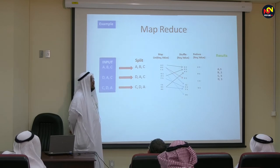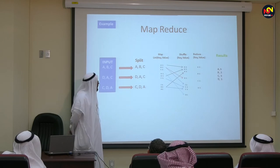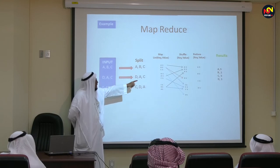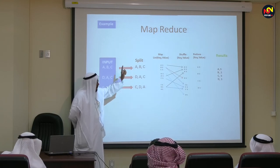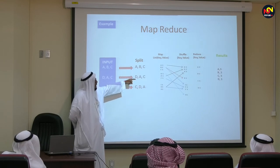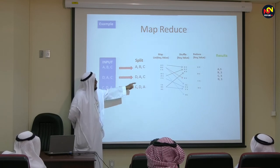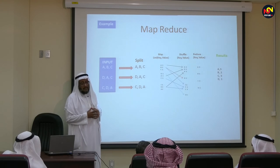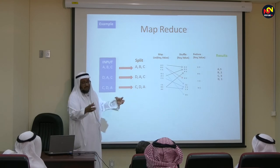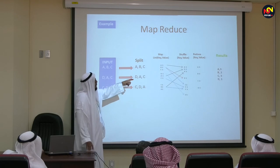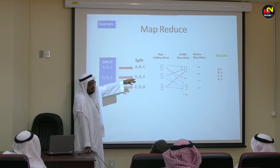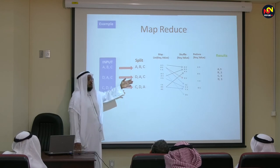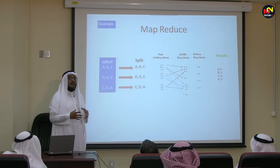In the reduce stage you collect and reduce the results. You find A appears three times, B appears one time, C appears three times. You get the results. This is like a word count example. You have big data — like a file consisting of one million records for movies, like Netflix users rating movies, giving their opinion. For data mining and machine learning datasets, you can go to the University of California Irvine — UCI — and find standard data you can use for medicine, medical purposes, and business.